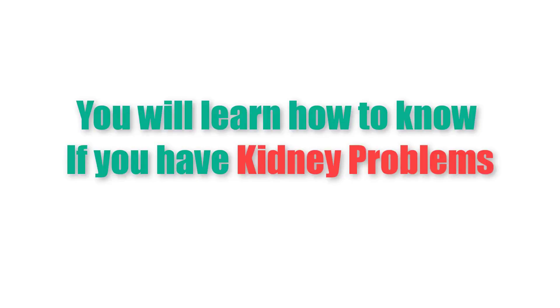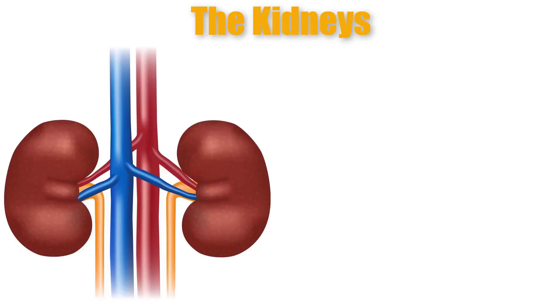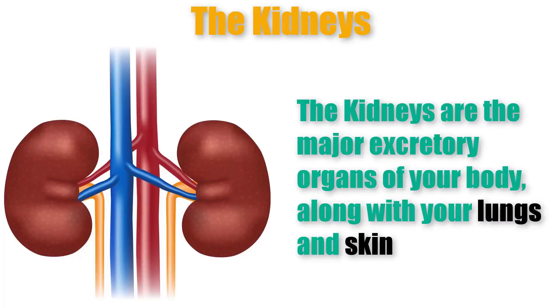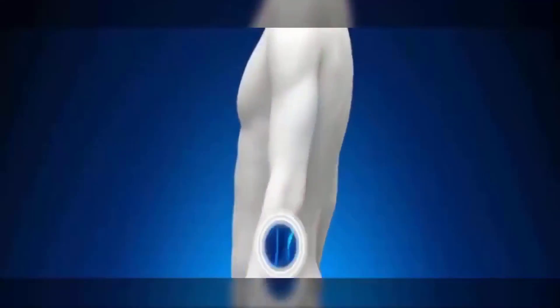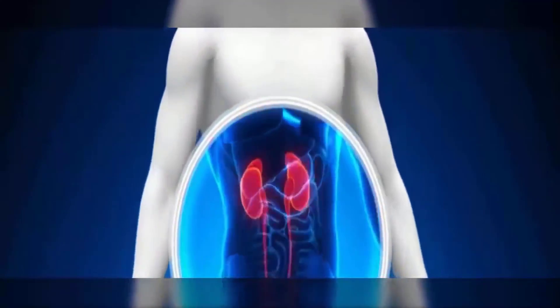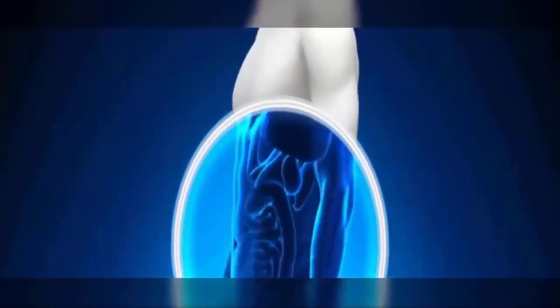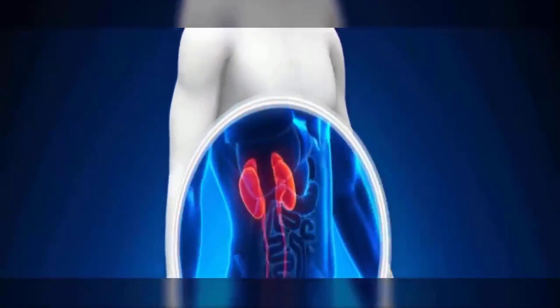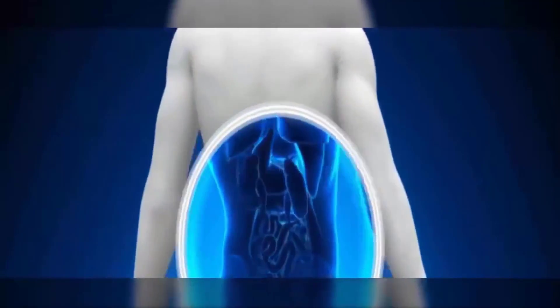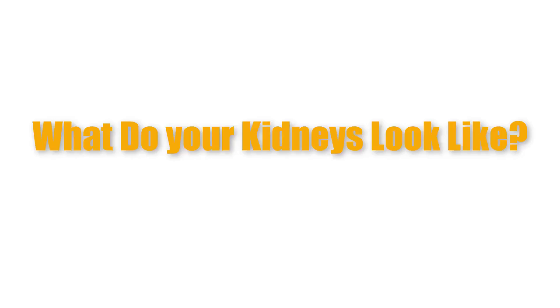This video will help you learn how to know if you have kidney problems. Let's start by reviewing some basic information about your kidneys. First of all, what are your kidneys? They are the major organs of the excretory system of your body, the other organs being the lungs and skin. Your kidneys are located just below the ribcage toward the back of your torso, with one on either side of the spine.